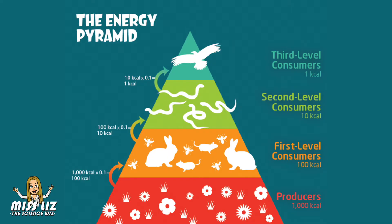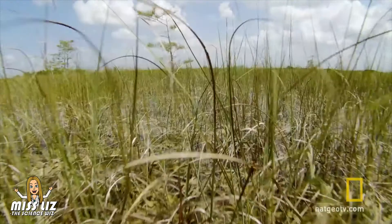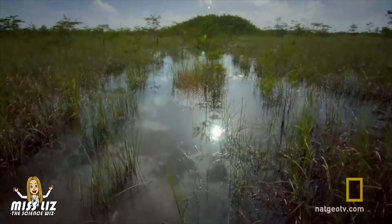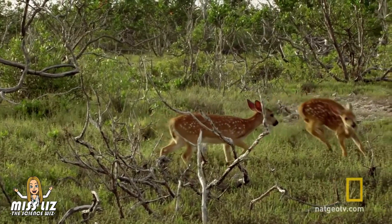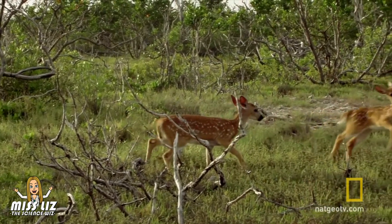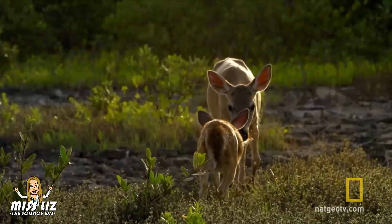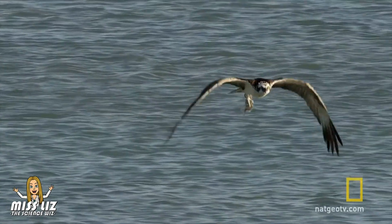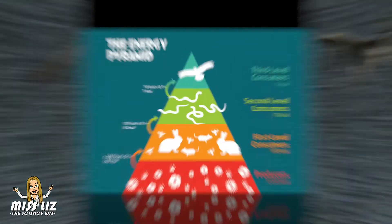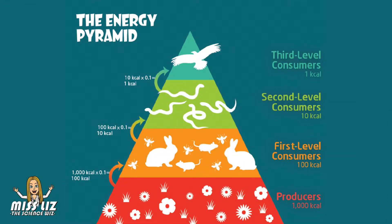We use the pyramid to model the available energy in an ecosystem. The majority of the energy is found in the producer level. This directly relates to the number of producers we find in the ecosystem. As you move up the pyramid there is less and less available energy, which means less and less organisms in the higher levels. Ever wonder why you don't see as many hawks as you do mice in an ecosystem? This pyramid shows you why.